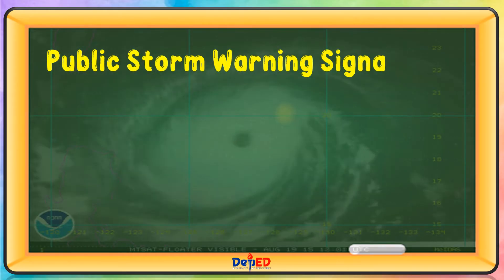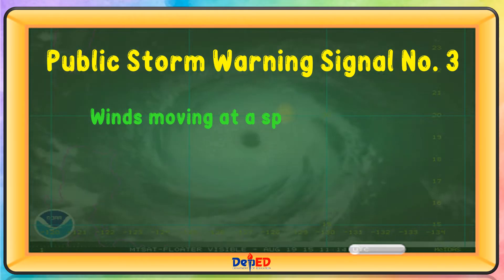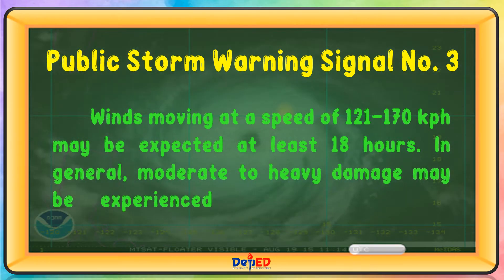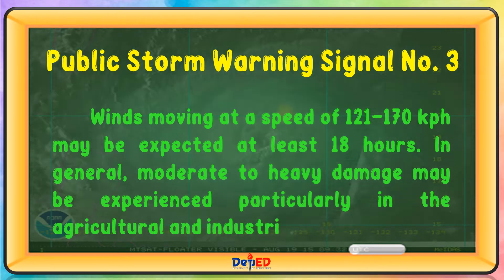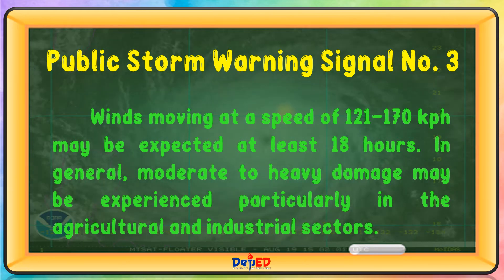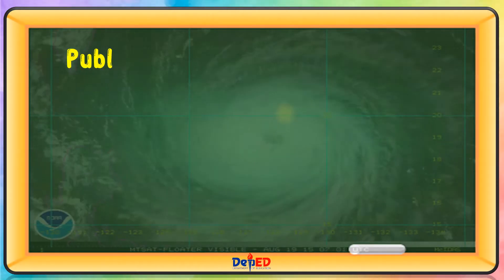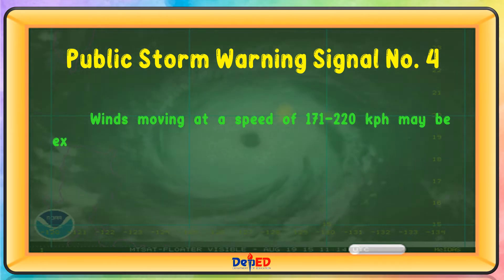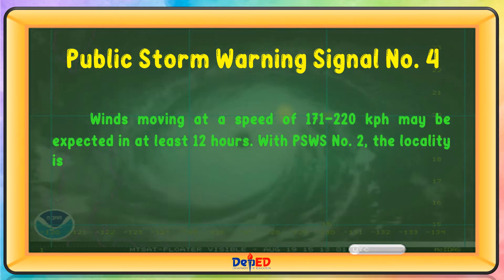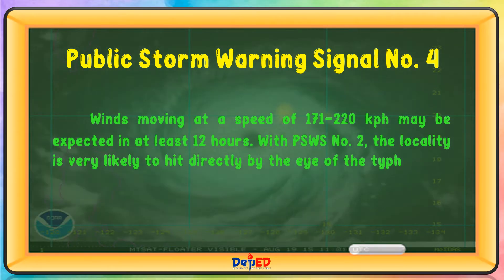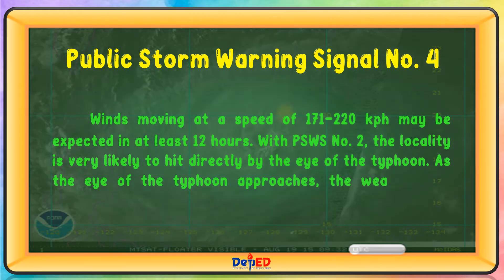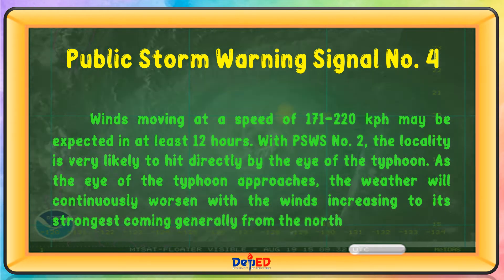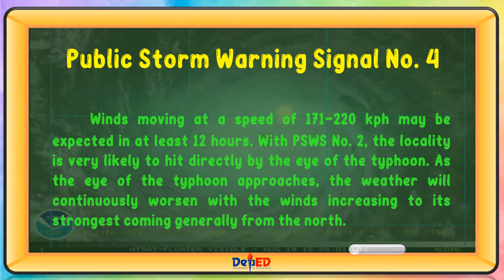Public storm warning signal number 3: winds moving at a speed of 121 to 170 km per hour may be expected at least 18 hours. In general, moderate to heavy damage may be experienced, particularly in the agricultural and industrial sectors. Public storm warning signal number 4: winds moving at a speed of 171 to 220 km per hour may be expected in at least 12 hours. As the eye of the typhoon approaches, the weather will continuously worsen with the winds increasing to its strongest, coming generally from the north.